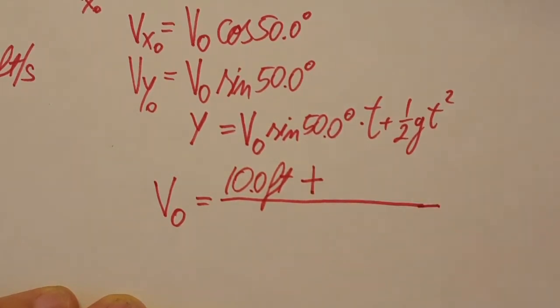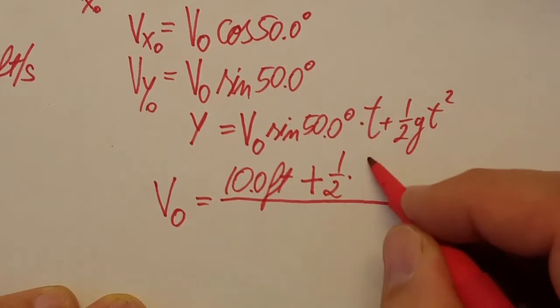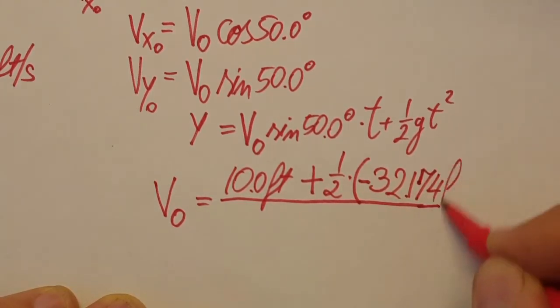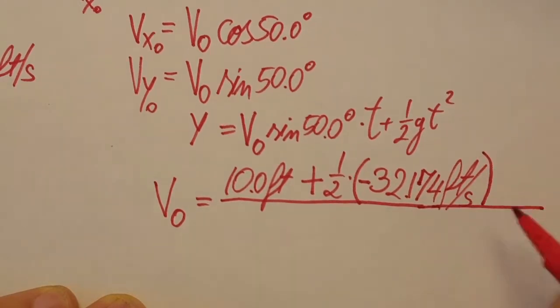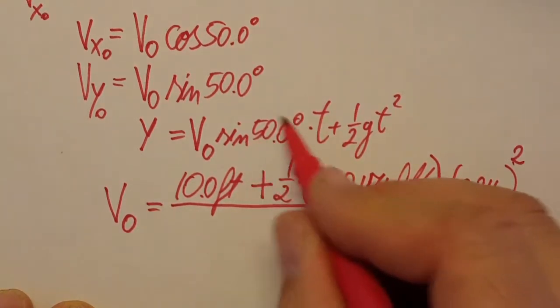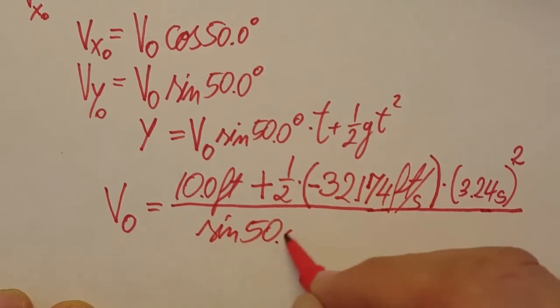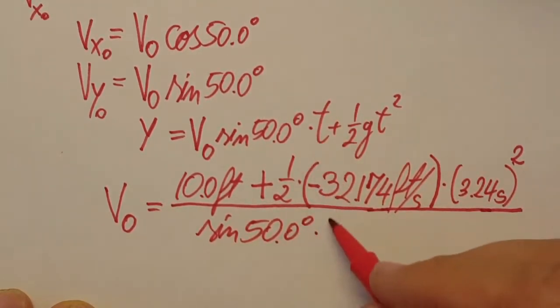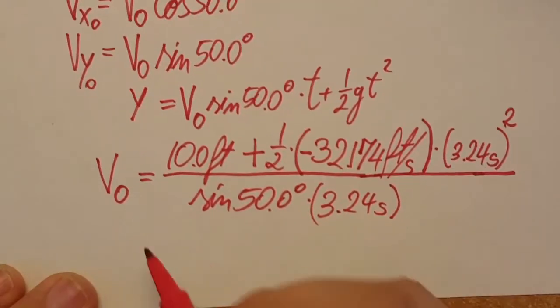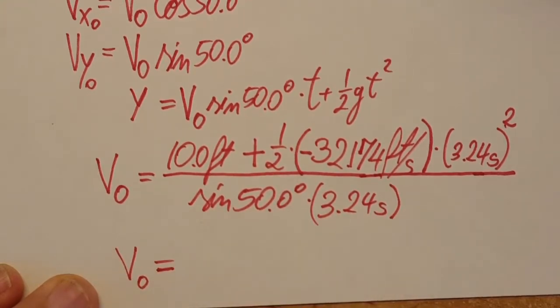Our y will be right here, 10 feet. We're gonna add, we have half of gt: one half times g, we said it's negative 32.174 feet per second and times time which is 3.24 seconds and on the square, on the square. Nice fraction. Now on the bottom we're gonna have dividing by sine of 50 degrees times time which is same as over there, 3.24 seconds.